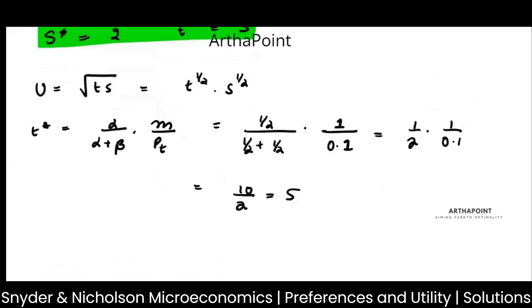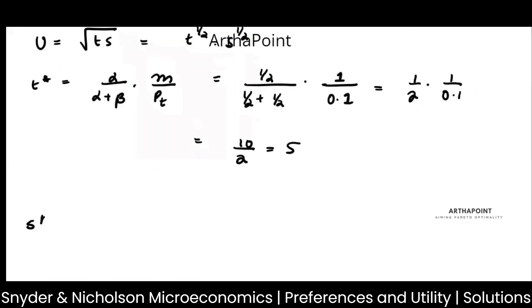Now the other thing is S star. S star will be beta upon alpha plus beta, M by PS. So power of S is half, so you will just have half upon half plus half, income is 1 upon price of S is 0.25, so it will be 4 by 2, which will be 2. That's it, you just have to do this much.